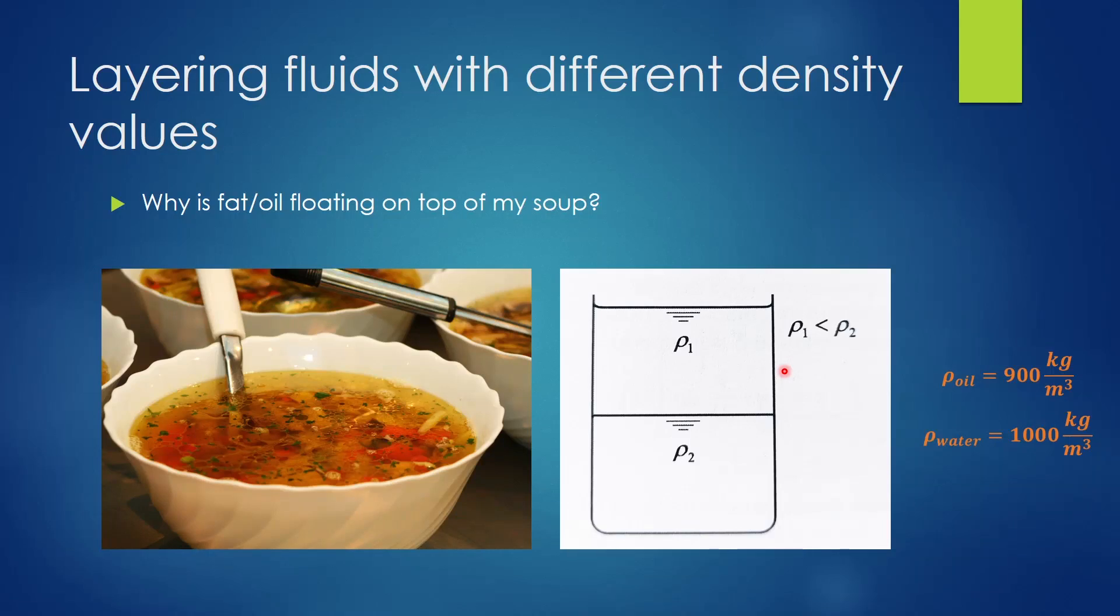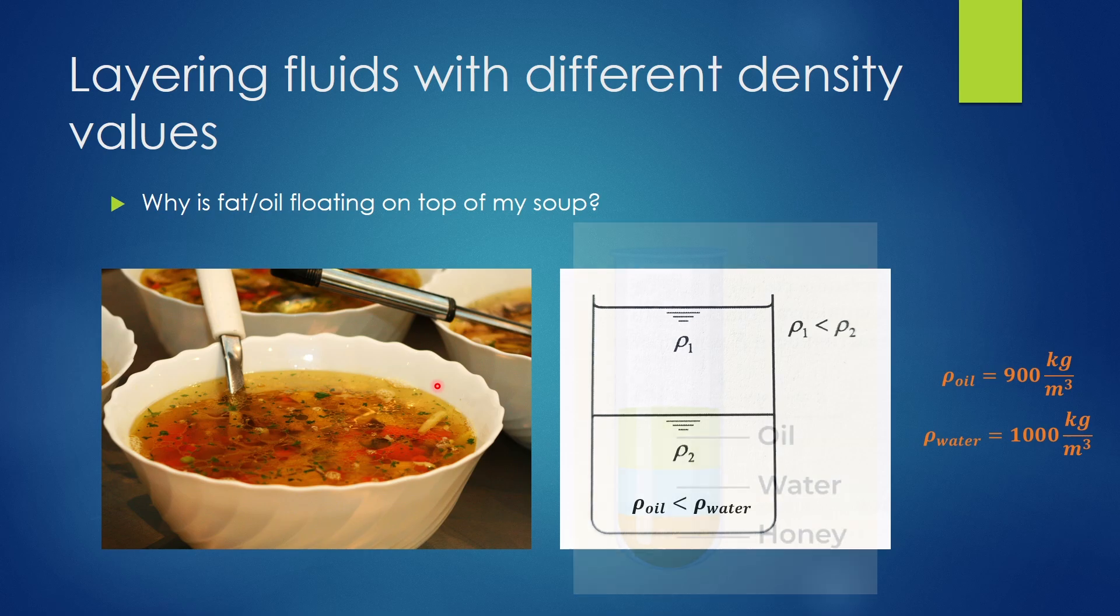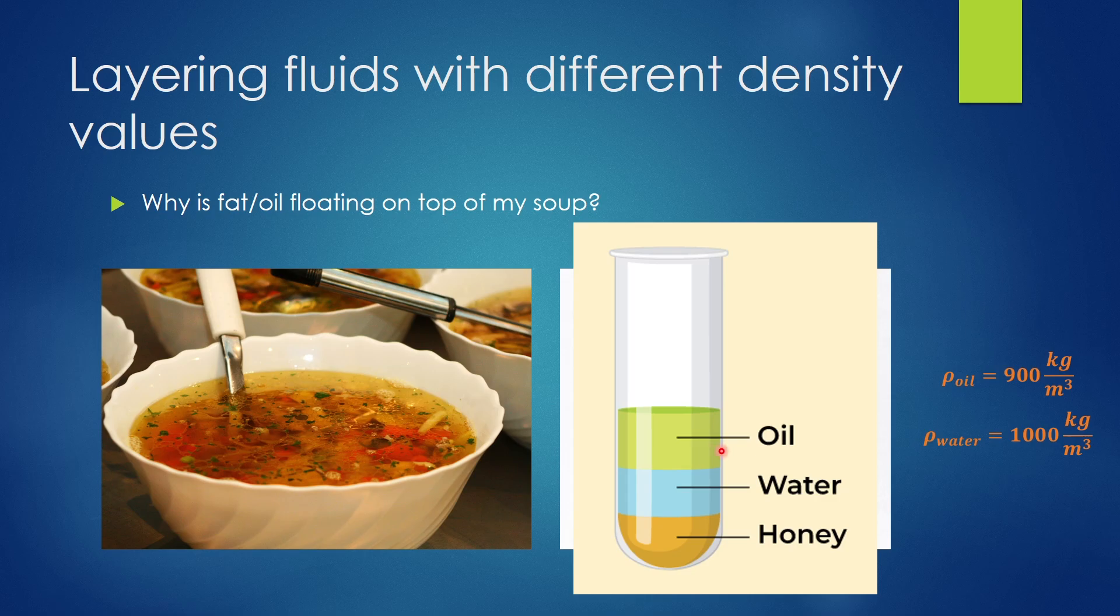So going back to the soup example, you can see why this happens. We have to talk a little bit about the impact of temperature on density of fluids, and then we will see how a change in temperature can result in a change in altitude. Now this could be done; the only problem is that honey is soluble in water, so you have to make sure when you pour honey that you pour the water slowly so it doesn't get mixed with honey. Honey here is the most dense fluid.